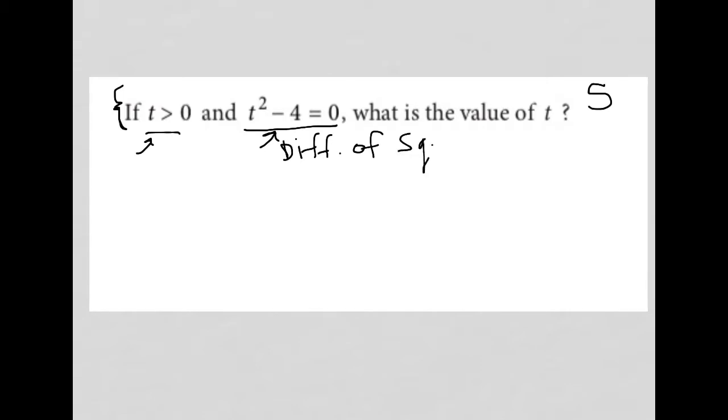And the way that we simplify that, just going to rewrite it, t squared minus 4 becomes t minus 2 times t plus 2.